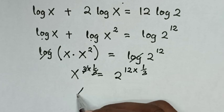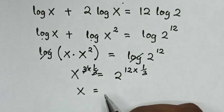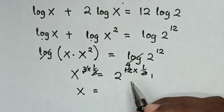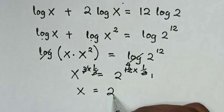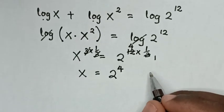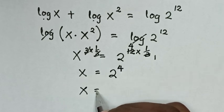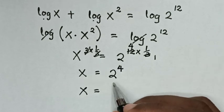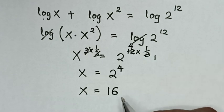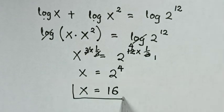Then x is equal to — the 3 cancels by 1 and 12 divides by 3 to give 4. So it will be 2 power of 4. Therefore x is equal to 2 power of 4, which is the same as 16. So this is our final answer.